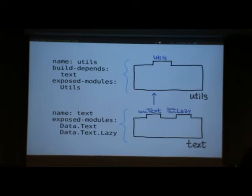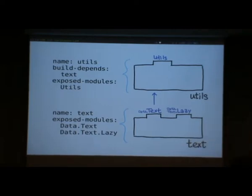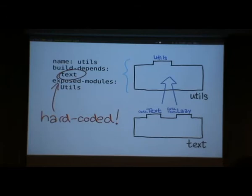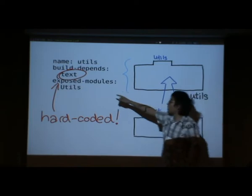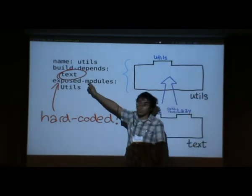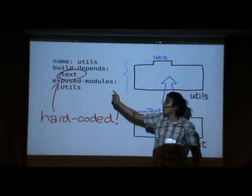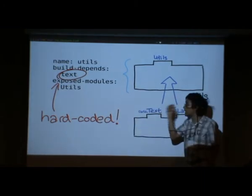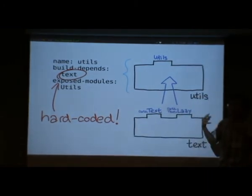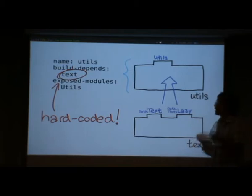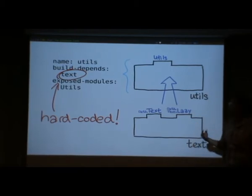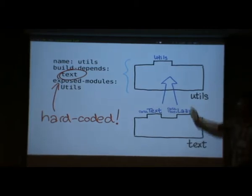Something else I need to show you is the Cabal package description for these packages — they pretty much look the way you would expect. One of the things about the way the package description is set up right now is that we've hard-coded a dependency on the text package. This is not a direct dependency because Cabal is still allowed to pick a version it thinks is suitable, but it does mean that if you want to change what component utils is using, you have to go and edit the Cabal file.